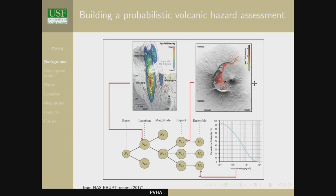Eventually you wind up with an ensemble which hopefully does a better job of forecasting than you would have considering only one model. The columns in this are interchangeable — you can calculate location before or after magnitude, and so on. The output is that exceedance probability plot for some phenomenon.